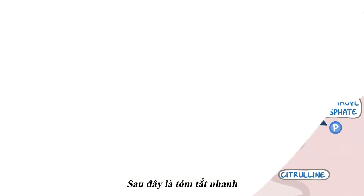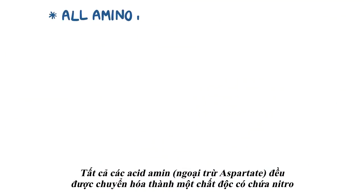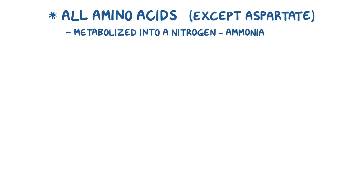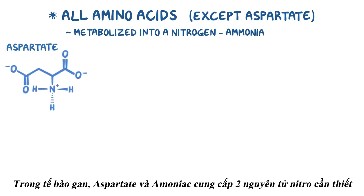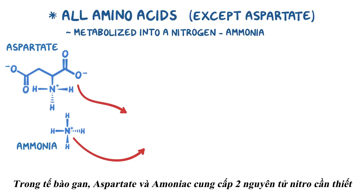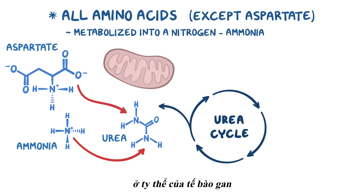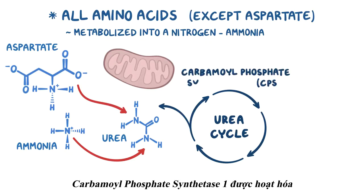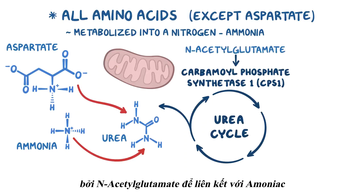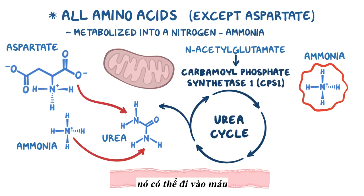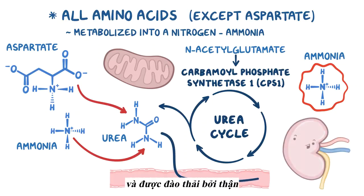As a quick recap: all amino acids, with the exception of aspartate, are metabolized into a nitrogen-containing toxic compound called ammonia. In liver cells, aspartate and ammonia provide the two nitrogens necessary to make the less toxic urea in the urea cycle. In the liver mitochondria, carbamoyl phosphate synthetase-1 requires allosteric activation from N-acetylglutamate to bind ammonia. Once urea is formed, it can go off into the bloodstream and get excreted by the kidneys.